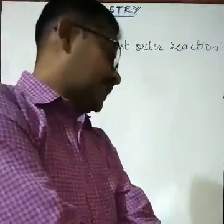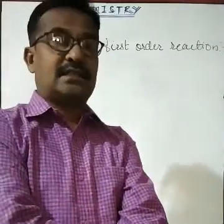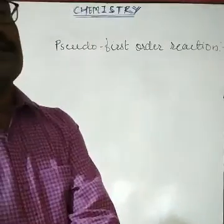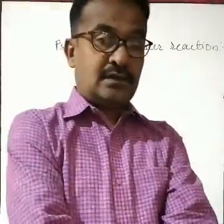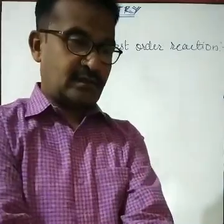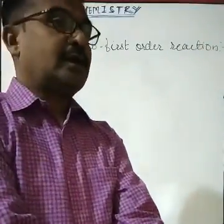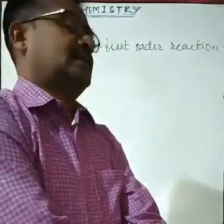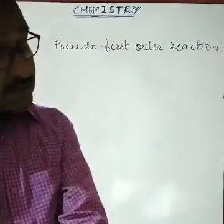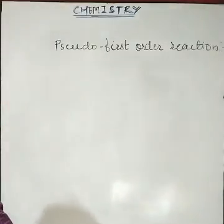The integrated form of the rate law expression is: t = (A₀ − Aₜ) / (2K). The half-life of a zero order reaction is equal to the initial concentration of reactants divided by 2K. This means the half-life of a zero order reaction is directly proportional to the initial concentration of reactants.